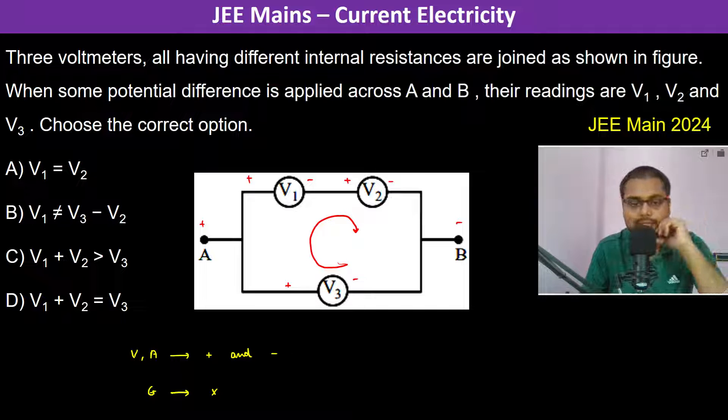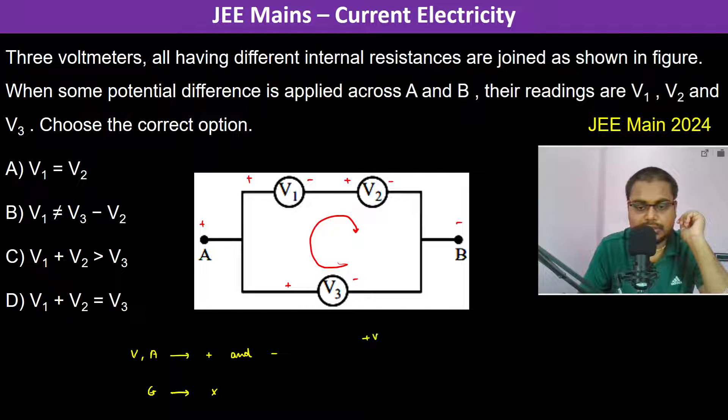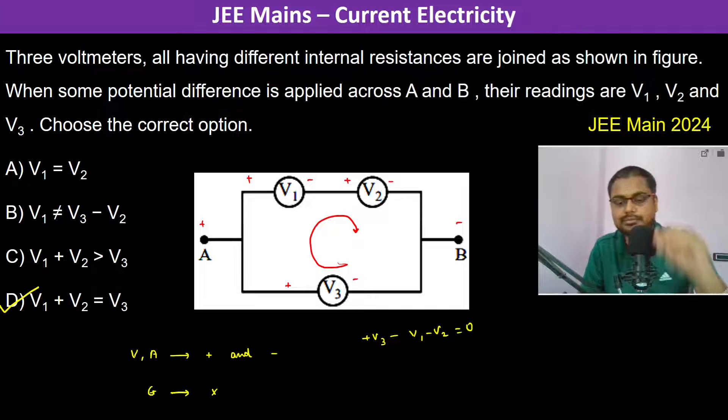How to connect the galvanometer. Now applying the loop law, we have A + V3 - V1 - V2 = 0. Therefore, V1 + V2 = V3.